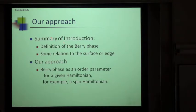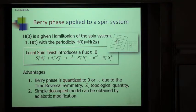In this summary of the introduction, I defined the Berry phase and showed a relation to the surface. Our approach is that we use the Berry phase as an order parameter for a given Hamiltonian, for example, a spin Hamiltonian. Let me show you some example of the definition of the Berry phase. This H₀ is the given Hamiltonian of the spin system and this also has periodicity. This one parameter t is defined by the local spin twist. The local spin twist introduces a flux, a local flux here.